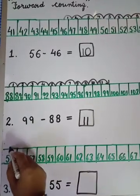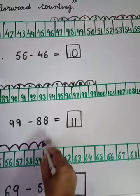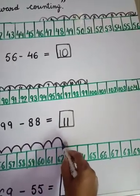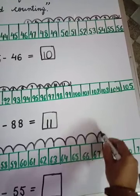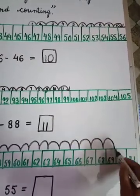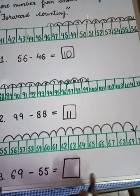We start from smaller number 55 to 69, move to the bigger number. Starting from 55: 56, 57, 58, 59, 60, 61, 62, 63, 64, 65, 66, 67, 68, 69. This way we can easily subtract big digits by forward counting.